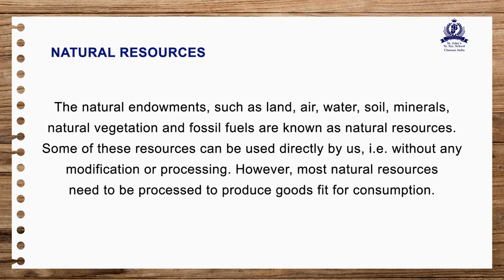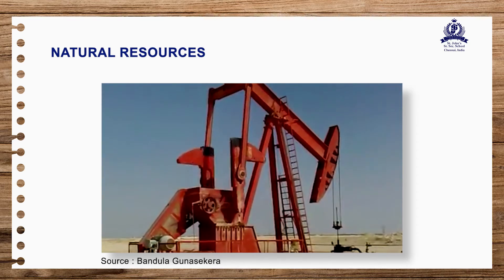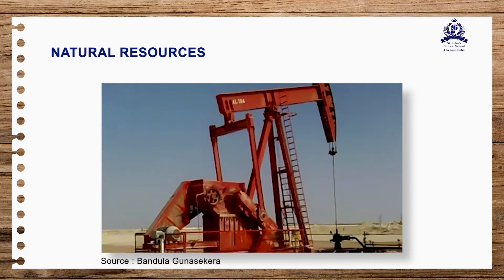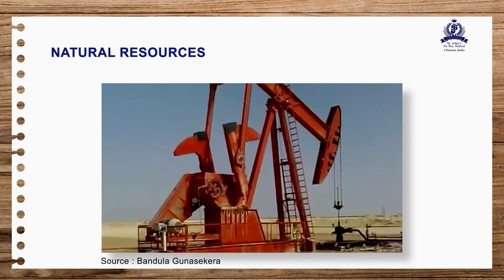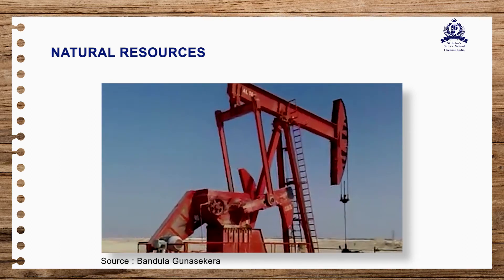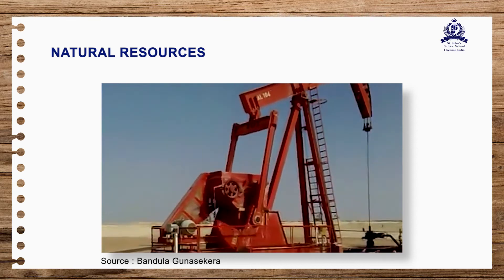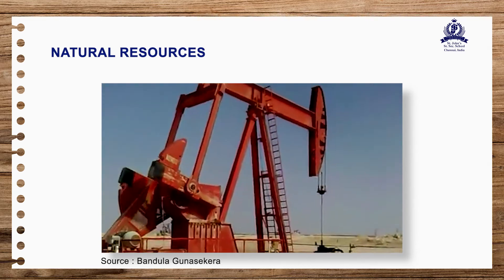Some of these resources can be used directly by us without any modification or processing. However, most natural resources need to be processed to produce goods fit for consumption. For example, air, water and fruit can be used directly, but minerals have to be separated from ores, and crude petroleum has to be refined to get petrol, diesel and wax. Thus natural resources provide us raw materials which have to be processed into useful products fit for human consumption.